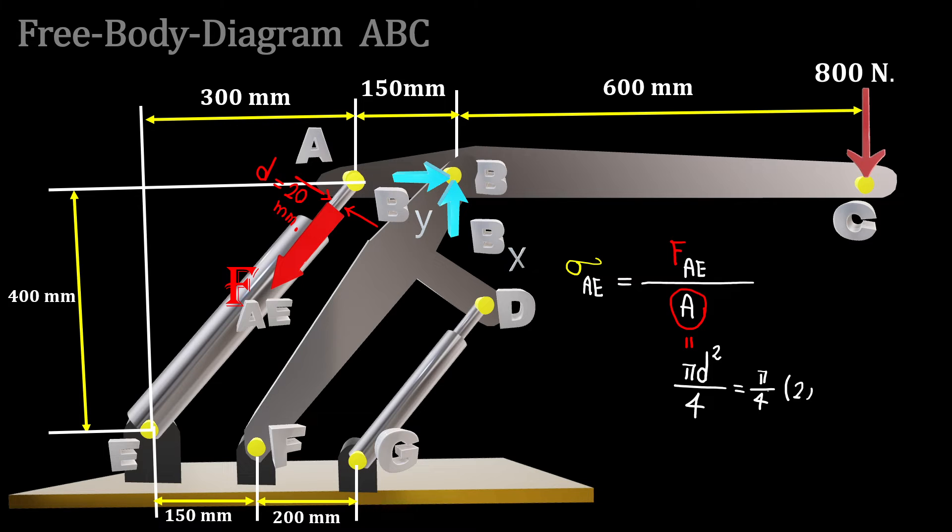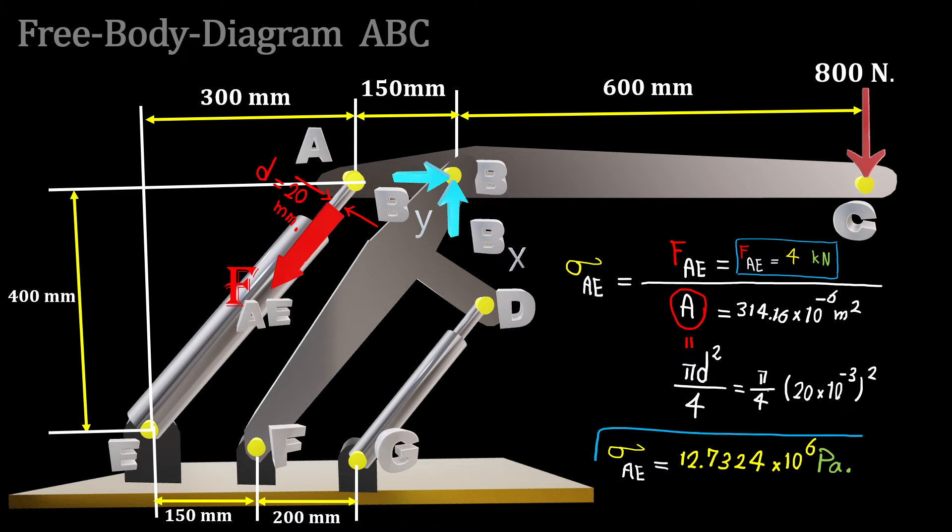The area is π/4 times d squared, so FAE is 4000 Newtons or 4 kilonewtons. This gives us a normal stress at AE of 12.7 times 10^6 Pascals or 12.7 megapascals.